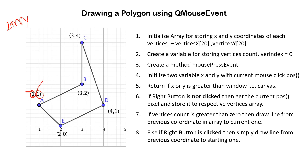We will keep collecting coordinates until the user clicks the right mouse button. For example, the user clicks points A, B, C, D, E using the left button. When the user finally clicks the right button, we stop storing coordinates and instead connect the last stored coordinate to the first stored coordinate, ensuring that our polygon becomes a closed figure.